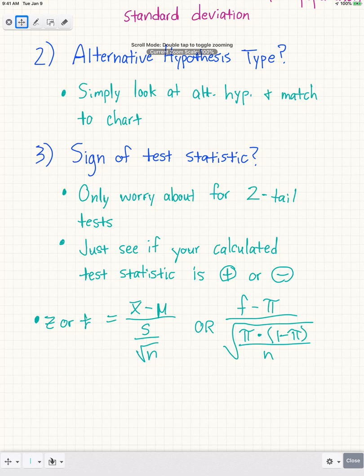The way we solve for those test statistics for Z or T tests is the same formula for both. The first formula is for mean-based problems: X-bar (your sample mean) minus mu (your population mean), divided by your standard error, which for mean-based problems is S (your standard deviation) divided by the square root of n (the number of trials in your sample).